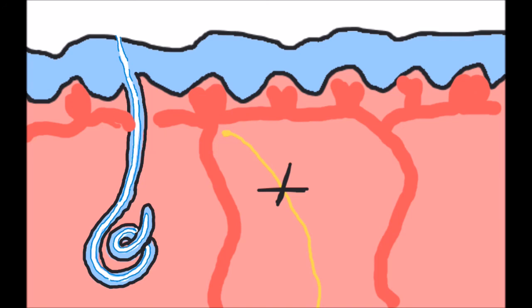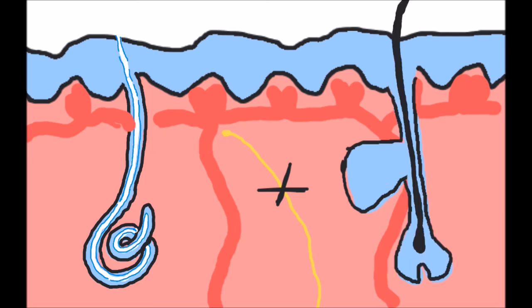Sebaceous glands are a second major type of gland found in the skin, and they produce oil which discharges onto a hair follicle or directly to the surface of the skin.